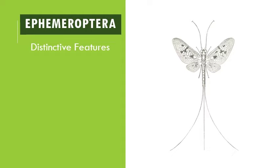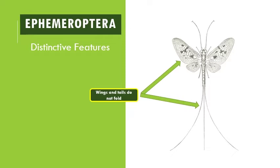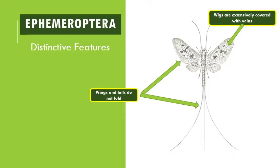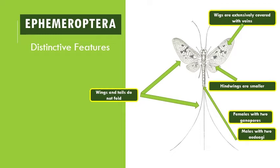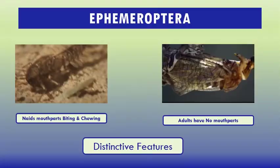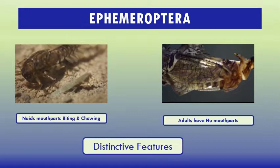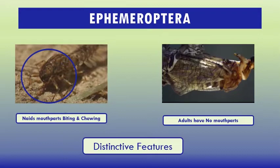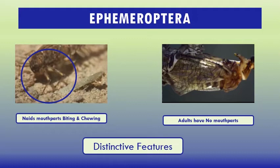Some adults live for only a few minutes. Mayflies at the survival stage are a favorite food of many fish. They are capable of detecting ultraviolet light and are thought to use this during cold shifts to detect females flying above them. Some distinctive features of mayflies: wings and tails do not fold, wings are extensively covered with veins, hind wings are smaller, females have two gonopores, and males have two aedeagi. Nymphs have biting and chewing mouthparts and large compound eyes.